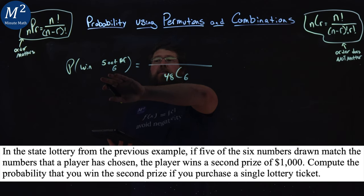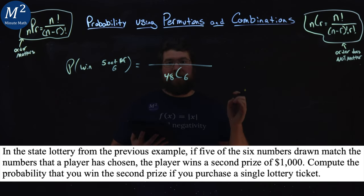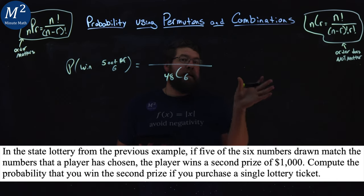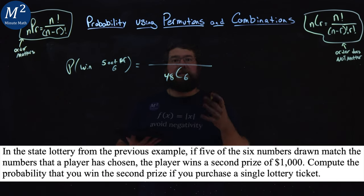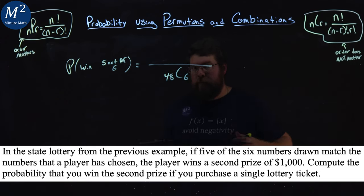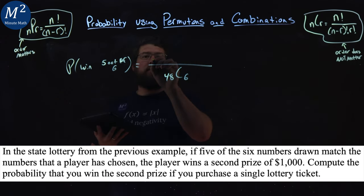Now we have to find the probability of getting five out of the six. There's only one set of six numbers that end up being correct. We have to get five out of the six numbers correct. Out of the total six numbers, we have to get five of them correct. That's 6 choose 5.